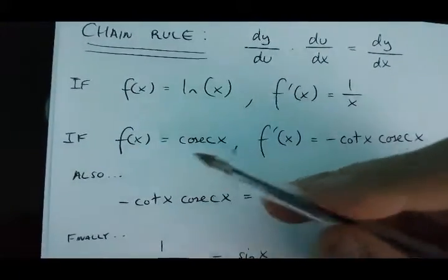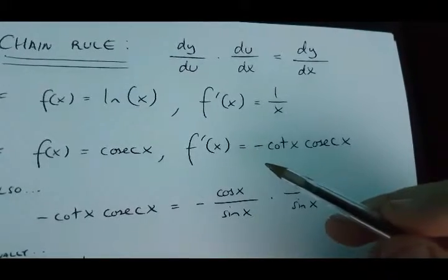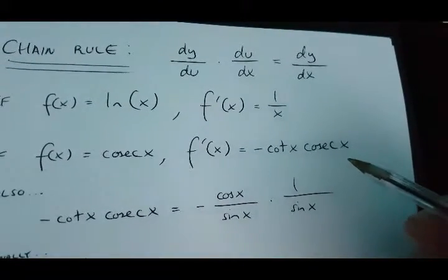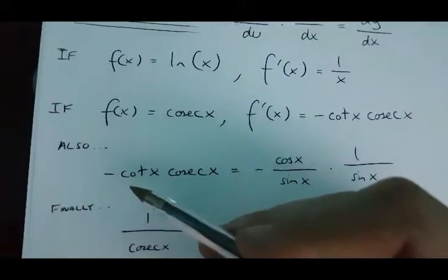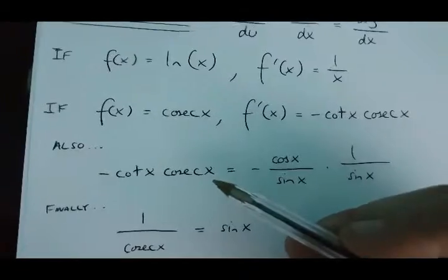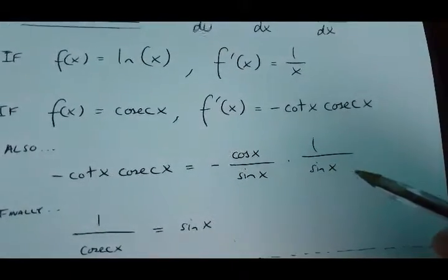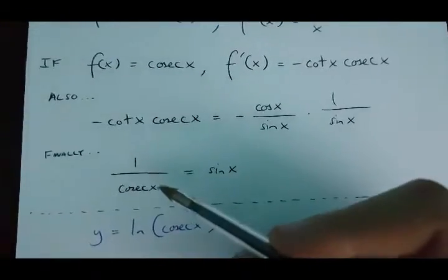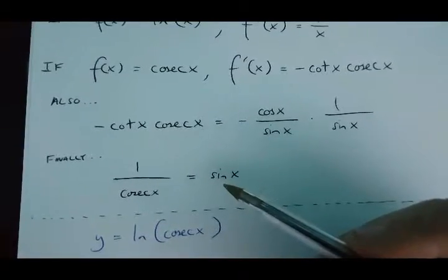If f(x) equals cosec x, then its derivative equals minus cot x times cosec x. However, minus cot x times cosec x equals minus cos x over sin x times 1 over sin x. And finally, 1 over cosec x is equal to sin x.